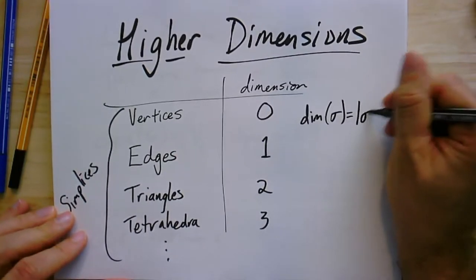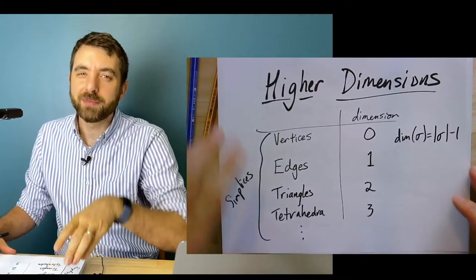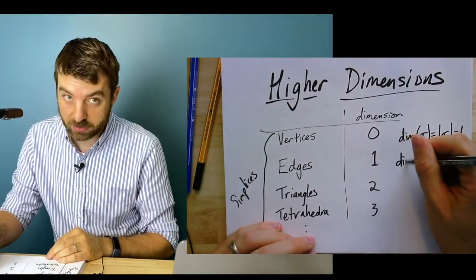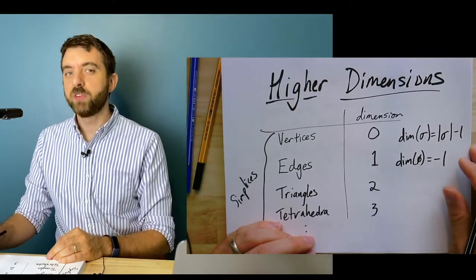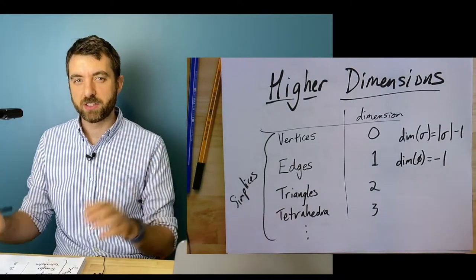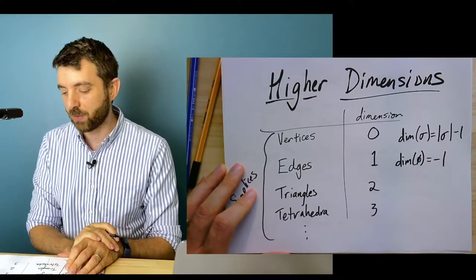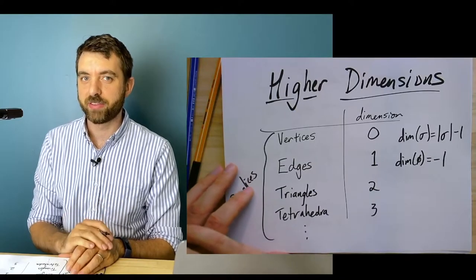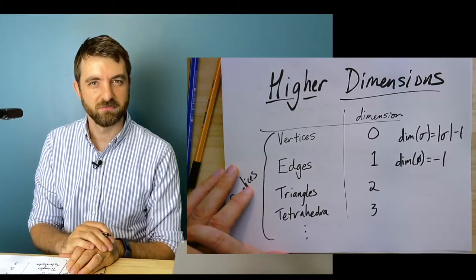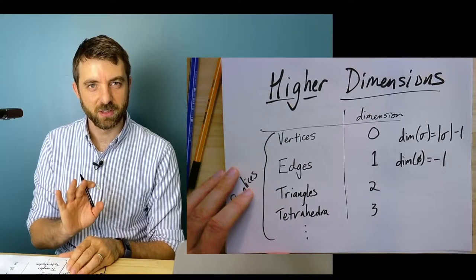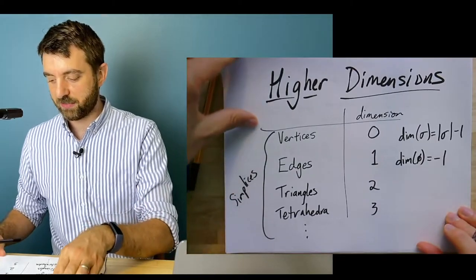Now I know what you're thinking — what about the empty simplex? The dimension of the empty simplex, which has size zero, is negative one. Some of you may have spent time trying to imagine the fourth dimension, but I wonder how many of you spent any time trying to think about what it would be like to be in dimension negative one. We should take a little poll to find out what we should call this dimension, but it's handy to have as a simplex, so we continue the definition — it's like the negative-one-dimensional object. Deal with it.